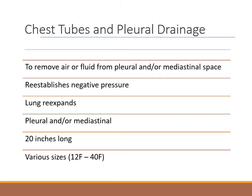Whenever fluid or air accumulates in the pleural space, the pressure becomes positive instead of negative and the lungs collapse. Chest tubes are inserted to drain the pleural space and reestablish negative pressure, allowing for proper lung expansion. They may also be inserted in the mediastinal space to drain air and fluid postoperatively. Chest tubes are approximately 20 inches or 51 centimeters long and vary in size from 12 French to 40 French. Large tubes (36-40 French) are used to drain blood; medium tubes (24-36 French) are used to drain fluid; and small tubes (12-24 French) are used to drain air. Pigtail tubes are very small (10-14 French) with a curly end designed to keep them in place and are a safe and effective alternative to large-bore chest tubes for treatment of pneumothorax.